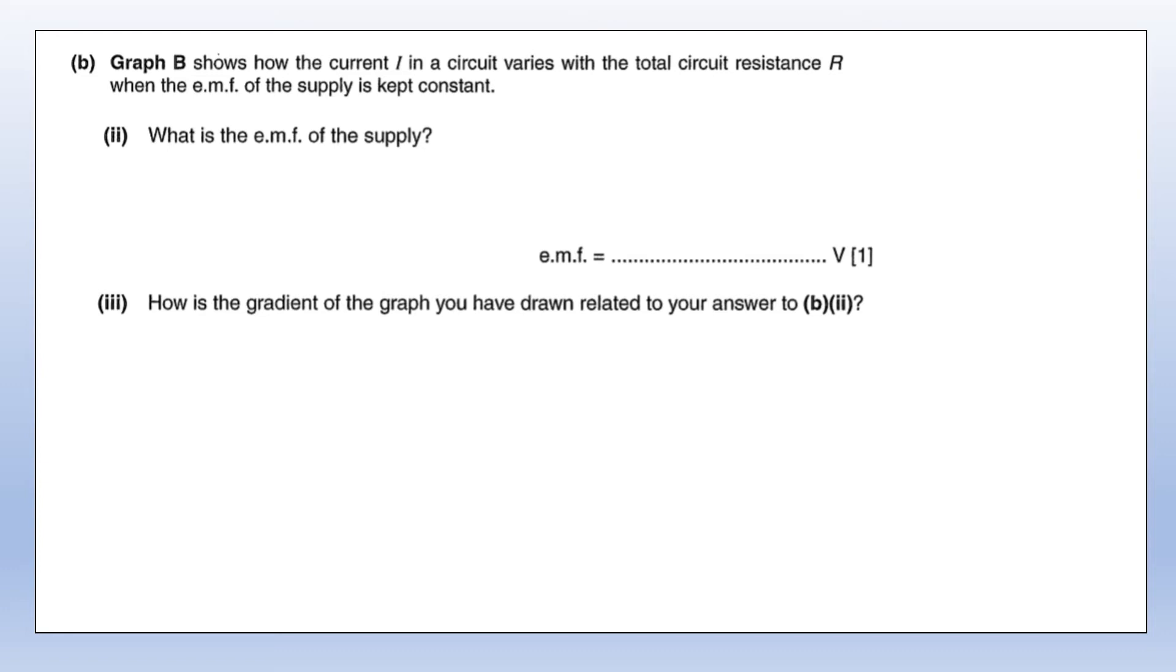Next we're going to use the graph to work out what the EMF of supply is. The first thing I'm going to do is use Ohm's law, so the EMF will be equal to the current through the battery times the total resistance. I'm going to rearrange that into y equals mx plus c form for the graph. So 1/I will be equal to 1/EMF times R, and what that means is the gradient of the straight line graph is 1/EMF. I'll calculate the gradient using zero zero as one of the points, giving an EMF of 240 volts. For part three, we found that the gradient is the reciprocal of the EMF, or 1/EMF.